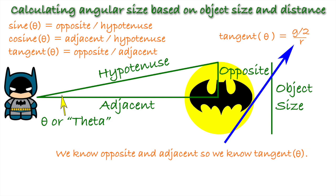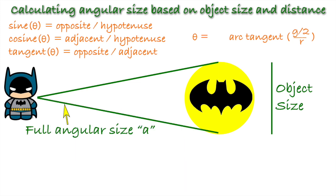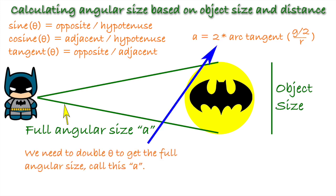Since we're interested in the value of theta, we need to do some basic algebra to get theta all alone on one side of the equation. To do this, we use the opposite of tangent, which is called arctangent. This gives us theta equals arctangent of G over 2 all over R. Since theta represents half of the angular size of the bat signal, we need to double the result to get the full angular size of the bat signal. Now we have the full formula to calculate the perspective angular size of an object.